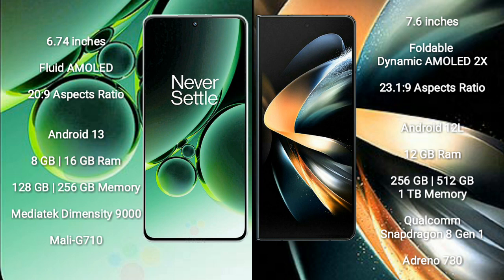OnePlus Nord 3 features a MediaTek Dimensity 9000 processor and Mali-G710 GPU. Samsung Galaxy Z Fold 4 comes with 12GB RAM and 256GB, 512GB, or 1TB internal storage, with a Qualcomm Snapdragon 8 Gen 1 processor and Adreno 730 GPU.